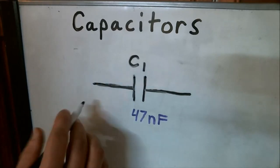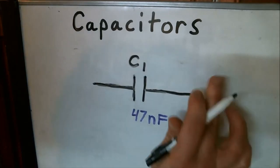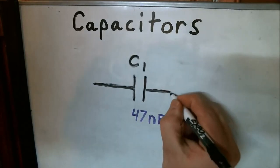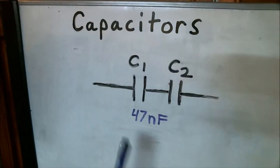Now if I take another capacitor and place it in series with this one. So we've added a second capacitor which has the same value as C1 so they're both 47 nanofarads.